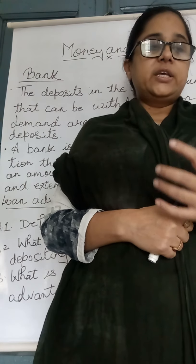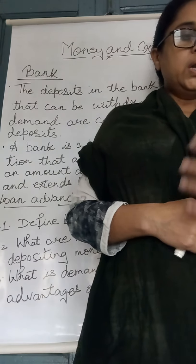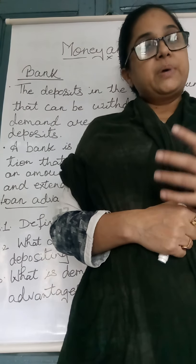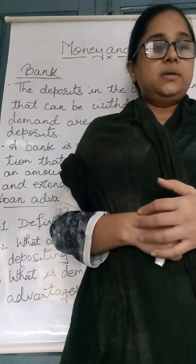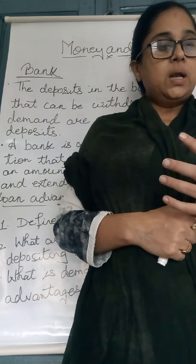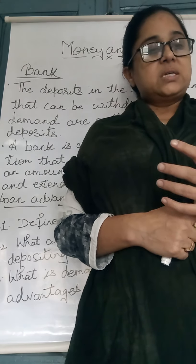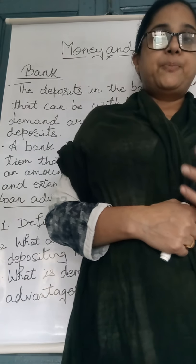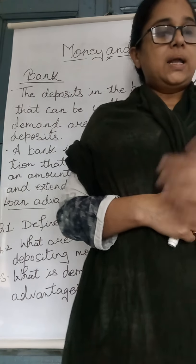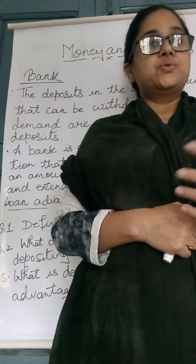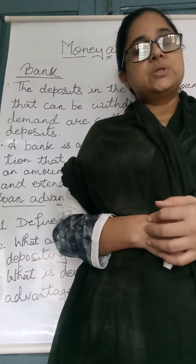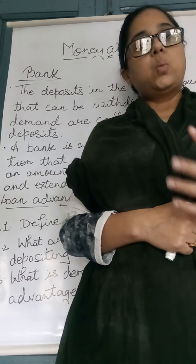After getting this check, Sohanlal deposits it in his account with Punjab National Bank, Delhi. The Punjab National Bank collects the money from Mohanlal's bank account with the State Bank of India and deposits it in Sohanlal's account. Mohanlal's balance in his bank account reduces and Sohanlal's balance in his account increases by an amount of Rs. 1 lakh.